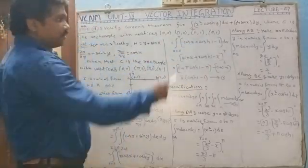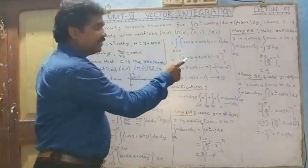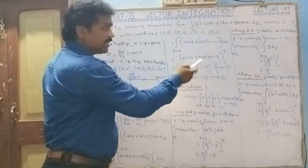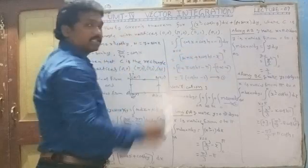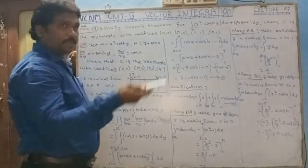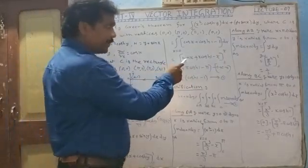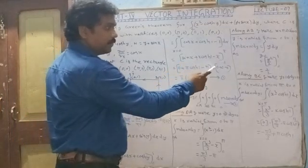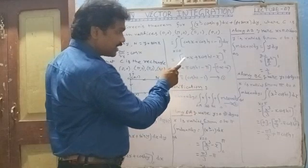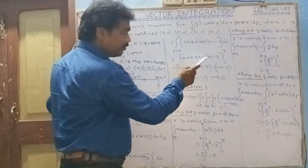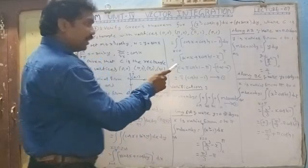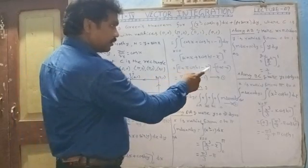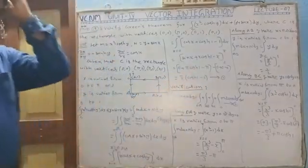Now integrate with respect to x: integration of cos(x) is sin(x); cosh(1) is a constant so its integration is cosh(1)·x; and minus 1 integrates to minus x. Applying limits from 0 to π: sin(π) is 0, so we get π·cosh(1) minus π, minus (sin(0) = 0). Finally, π·cosh(1) minus π, which equals π(cosh(1) minus 1). This is equation 1.